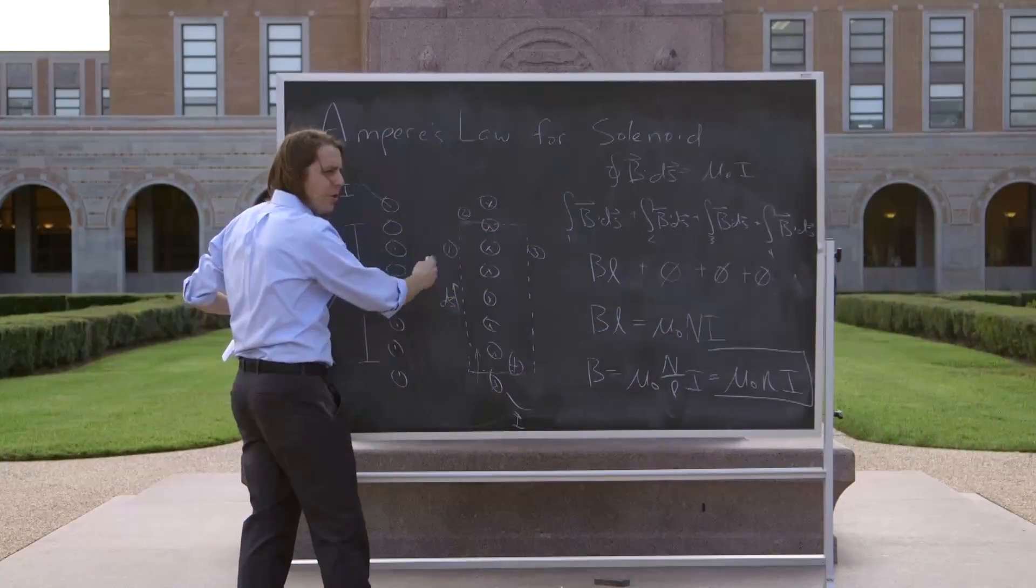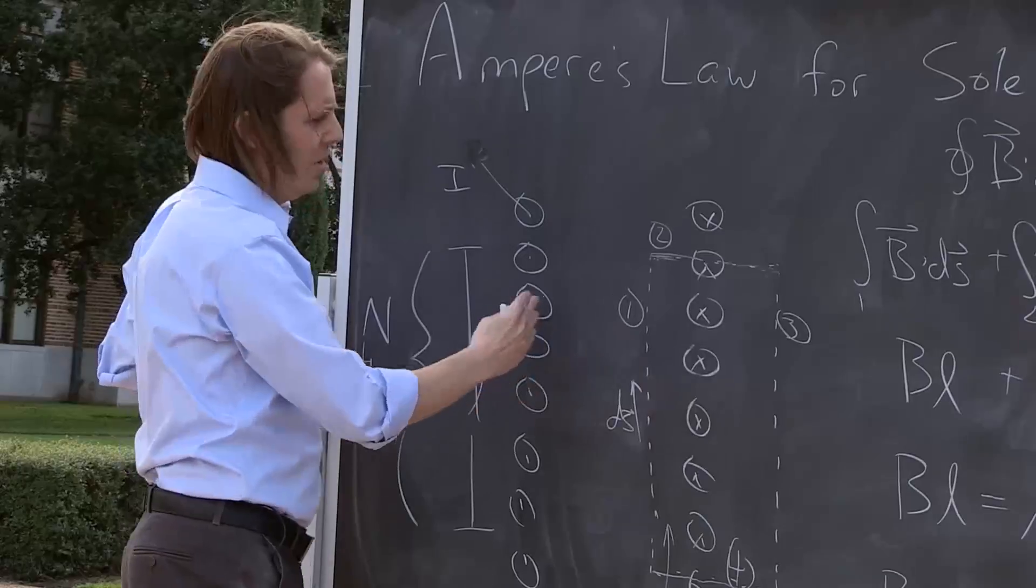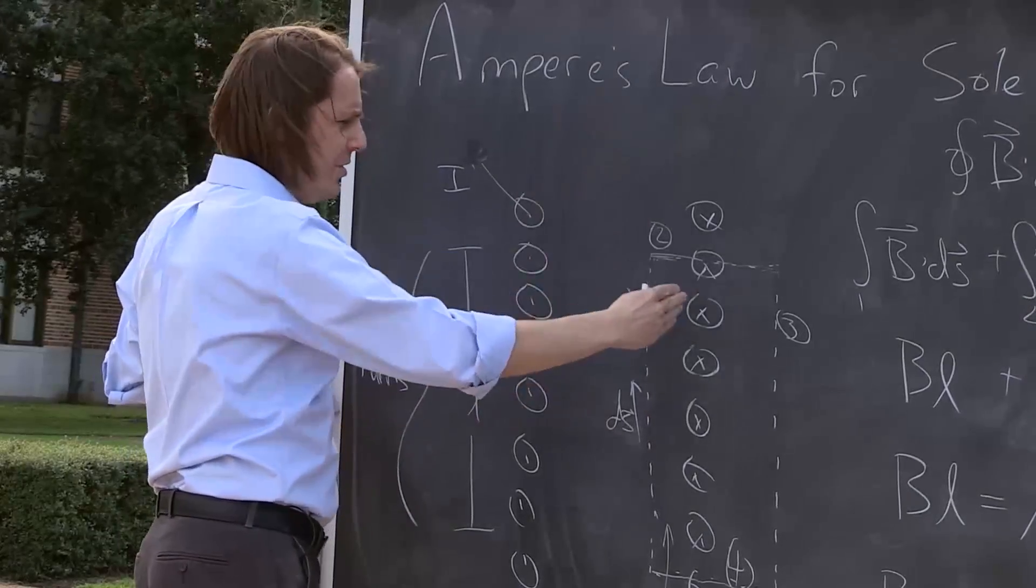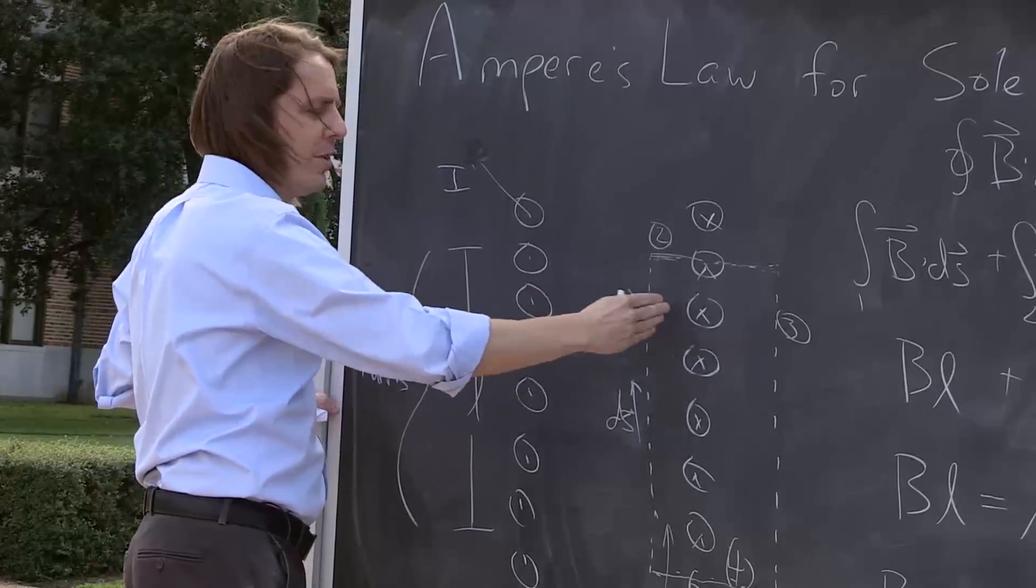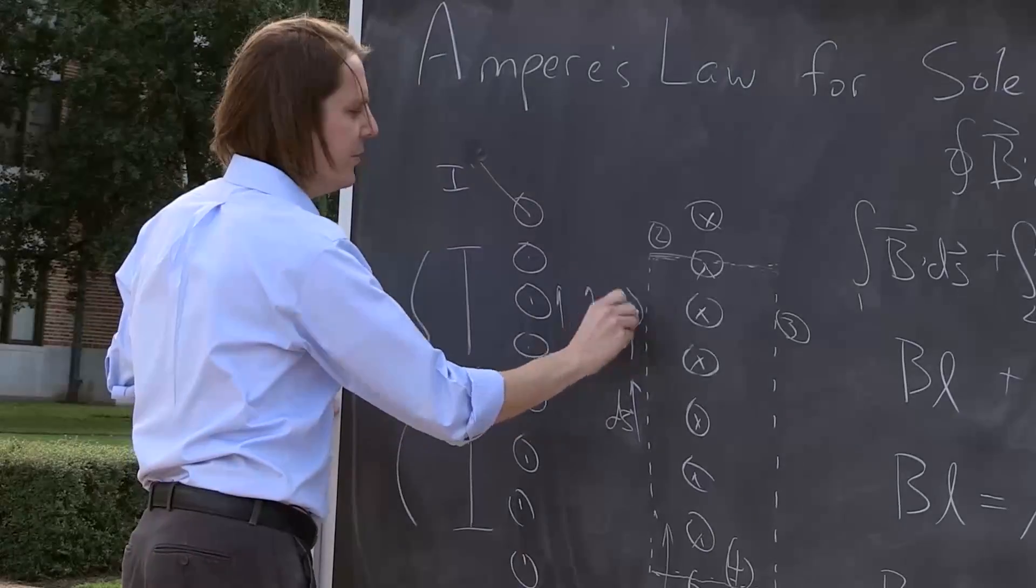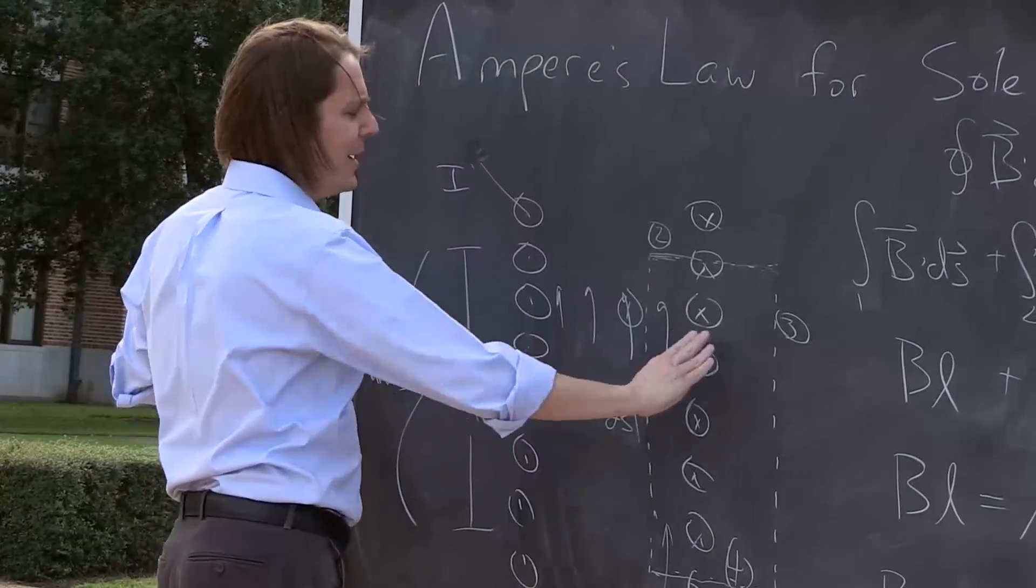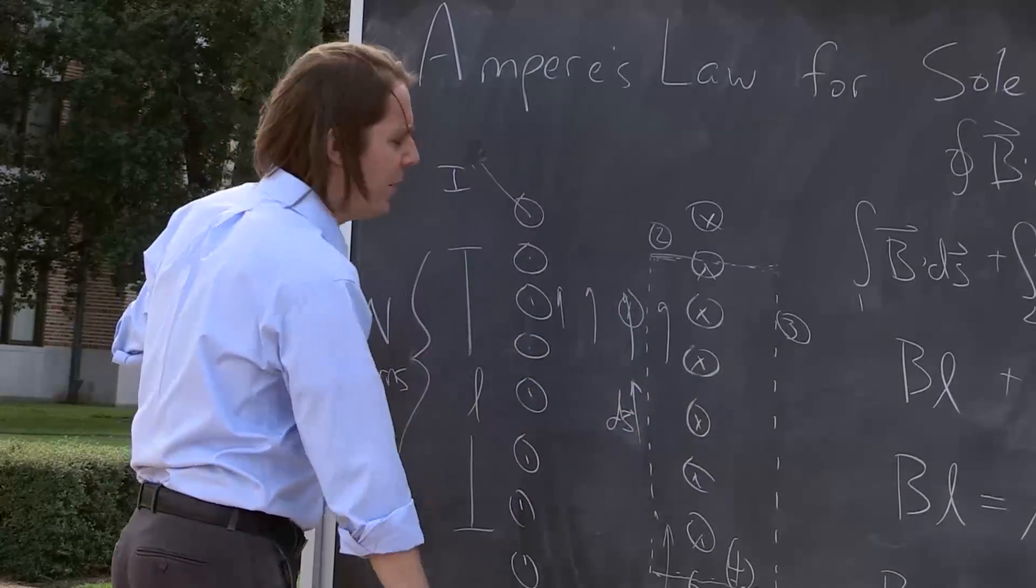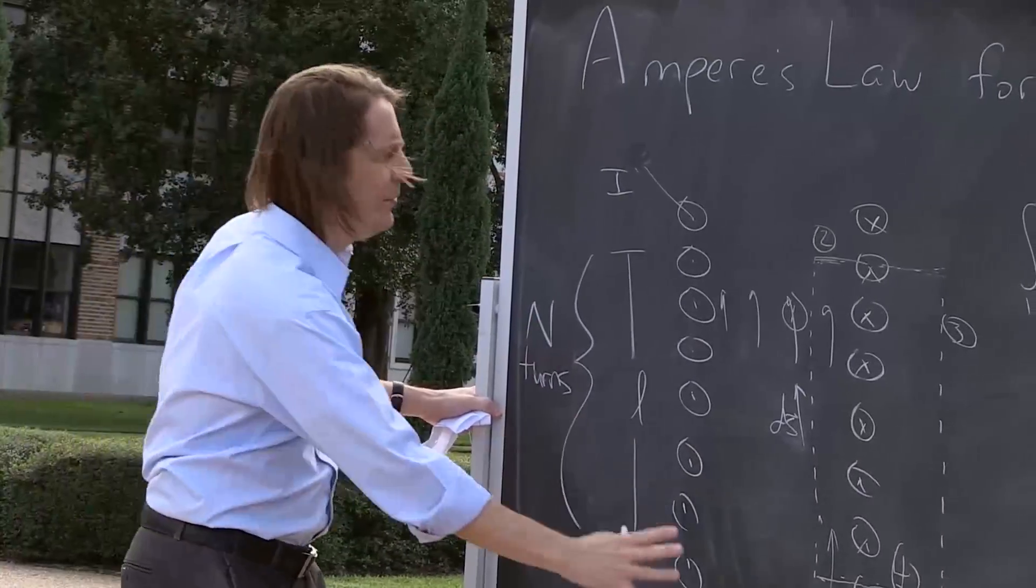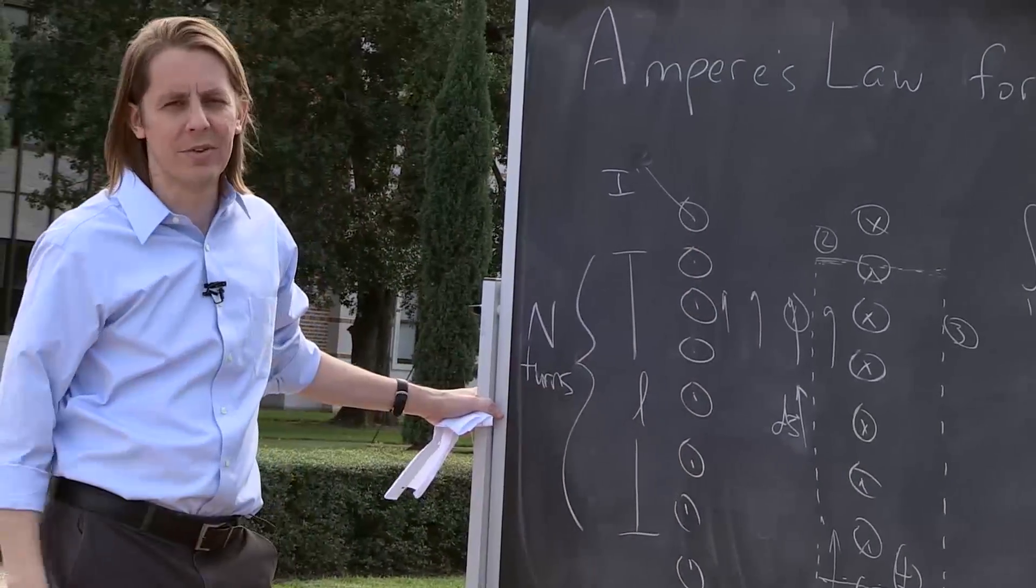But also, it doesn't depend on where you are in the solenoid. Nothing we did ever said if you're in the center or near the edge. And what Ampere's Law is telling you is that the B field is uniform as you move around in the solenoid. It always points up and it's the same magnitude here as it is here. Even though that magnitude changes in a single loop in the solenoid, it all becomes equal. And you can kind of see it in terms of field lines. All those field lines are going to distribute evenly inside the solenoid.